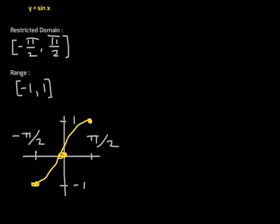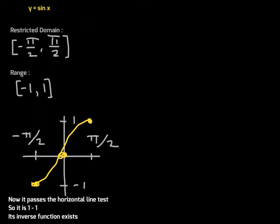This is what the graph looks like if we restrict the domain between negative π/2 to positive π/2. Please notice the restricted domain — it's very important. The range is still the same, between negative one and one. With this restricted domain, this function is definitely one-to-one, it passes the horizontal line test, and therefore its inverse function exists.